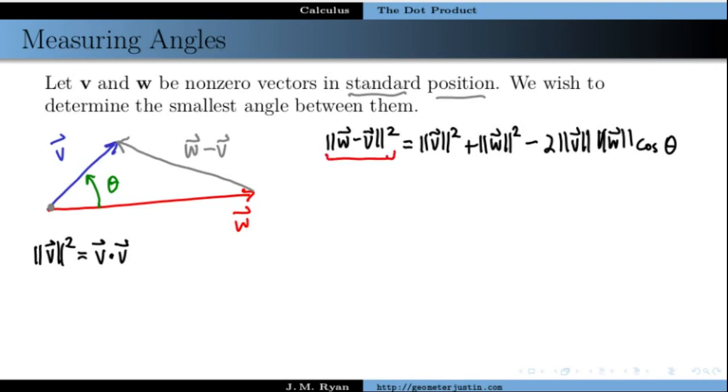And so plugging that in over here, the length of w minus v squared, that's going to be the dot product, w minus v, dot product with itself. And now from here, the dot product obeys all the distributive laws that we're used to with regular numbers.